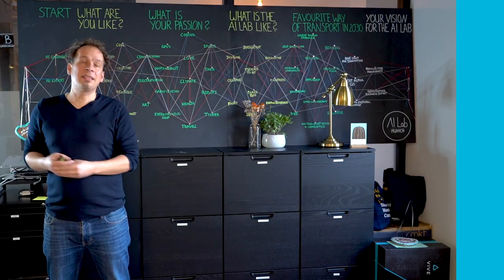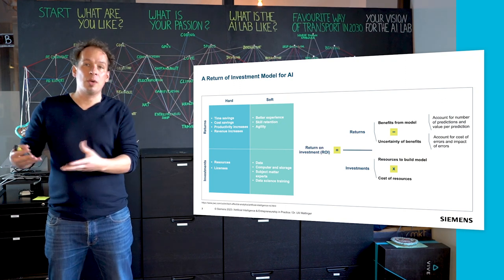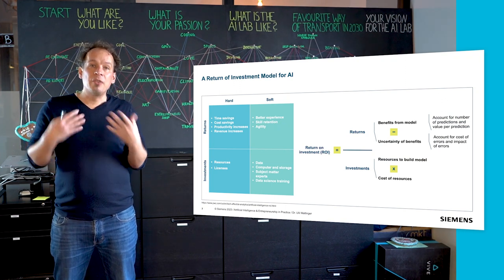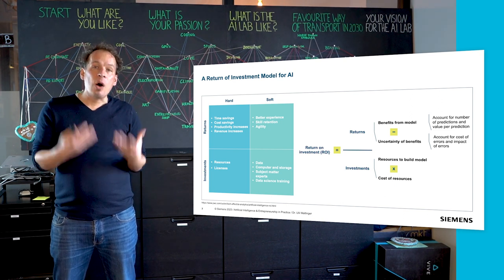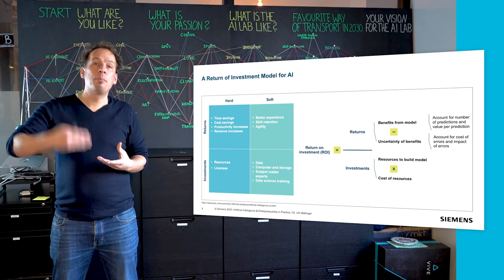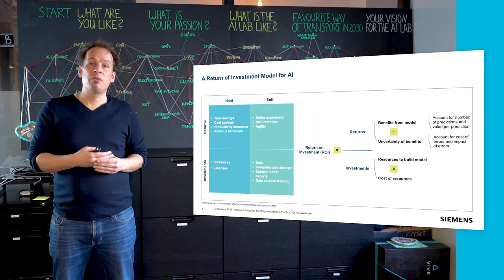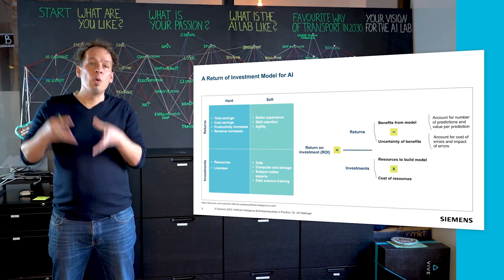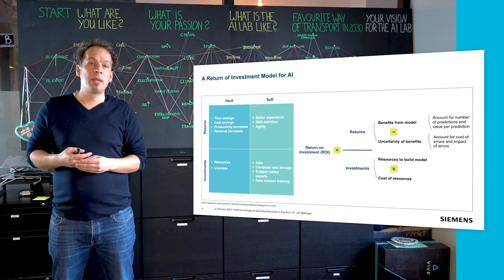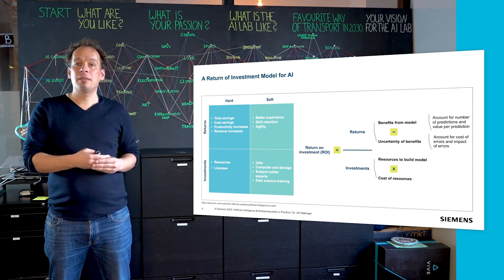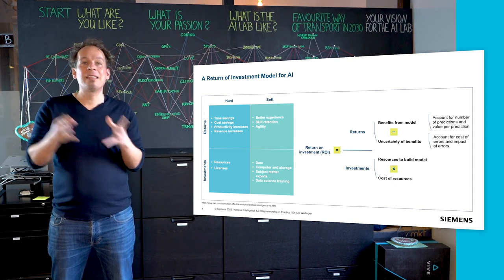The second framework I'd like to introduce is the return on invest model for AI, which differentiates and tries to quantify an outcome and the value per prediction. In this case, we want to quantify the prediction of an ML model and we differentiate between investments and returns, and between hard and soft factors.